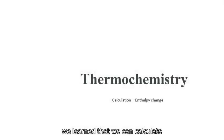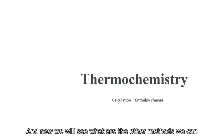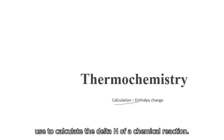In the previous video, we learned that we can calculate the heat exchange from a calorimeter which we can equate to the enthalpy change under constant pressure. And now we will see what are the other methods we can use to calculate the delta H of a chemical reaction.